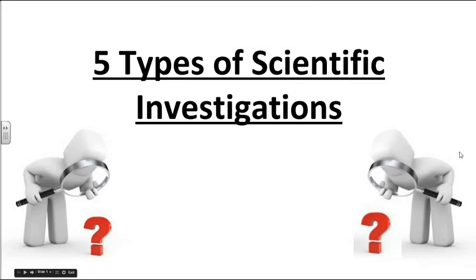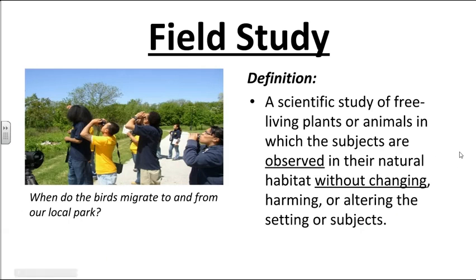I want to talk to you about five types of scientific investigations. Field studies are the first kind. Field studies involve observing living plants or animals. The subjects are observed without changing anything about the setting — we're not harming anything, we're not altering anything, we're just looking at what naturally occurs.